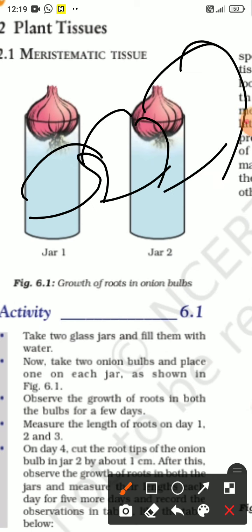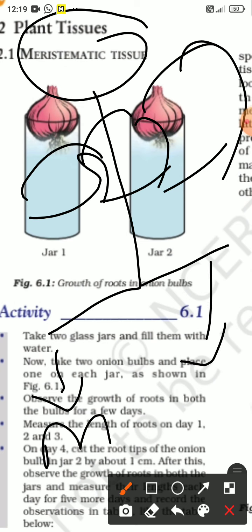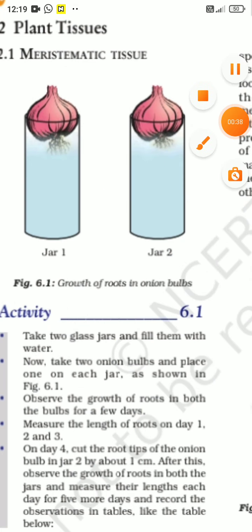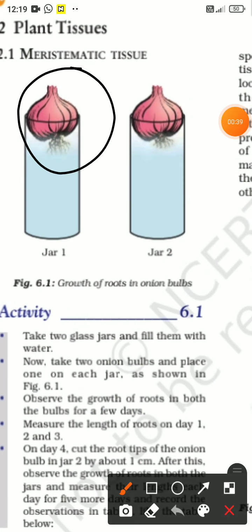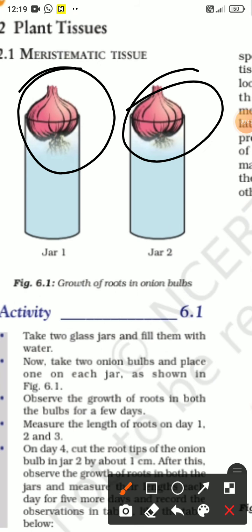Today I'll discuss plant tissue. Plant tissue has two types: meristematic tissue and permanent tissue. Tissue is responsible for the plant's growth. Now, if we place onions in these plants and cut their roots.